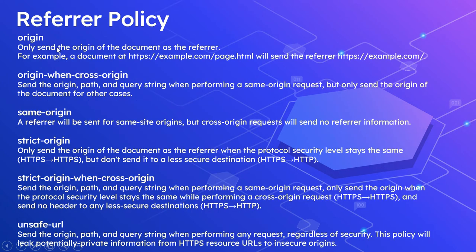The next value is origin: this sends only the origin of the document as the referrer. For example, a document at https://example.com/page.html will send the referrer as https://example.com — it won't send the page path or query parameters when accessing a sub-resource or link.